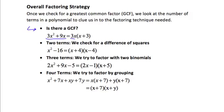We can factor 3x out front. When we divide it out of 3x squared, we'll have an x left. And when we divide it out of 9x, we'll have a 3 left. So we always check to see if there's a greatest common factor first.